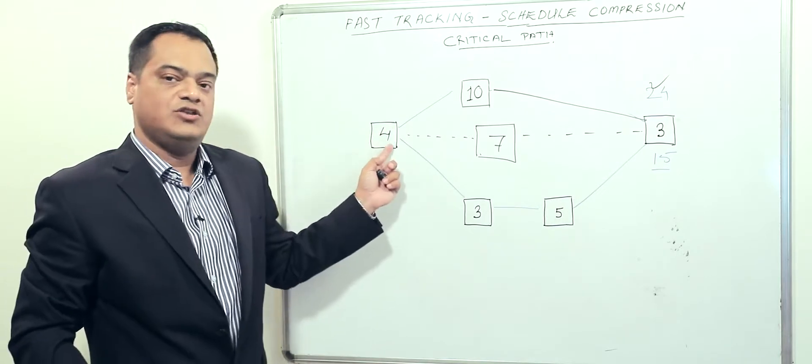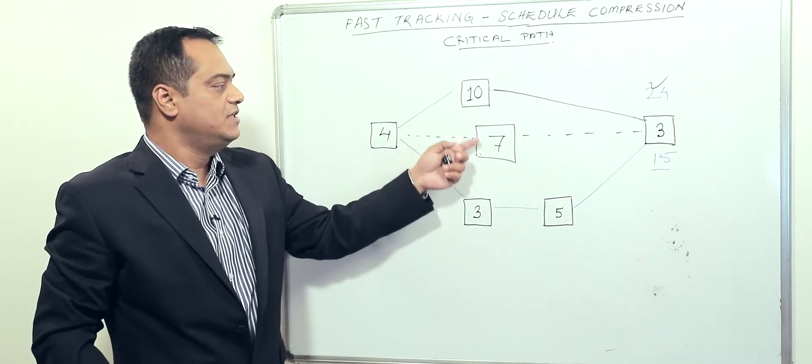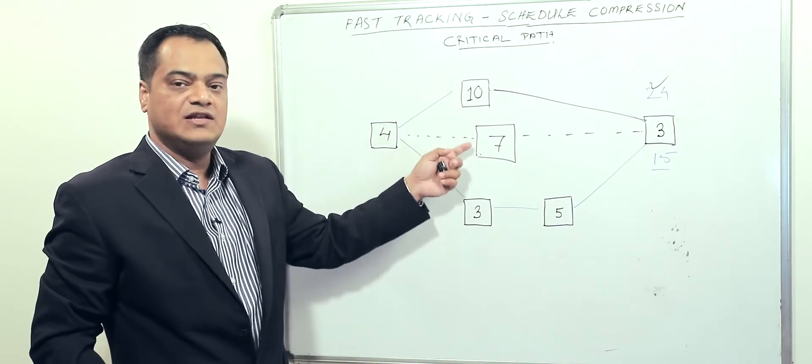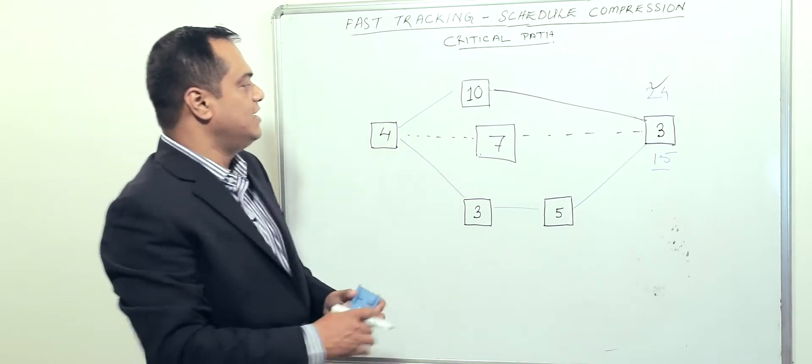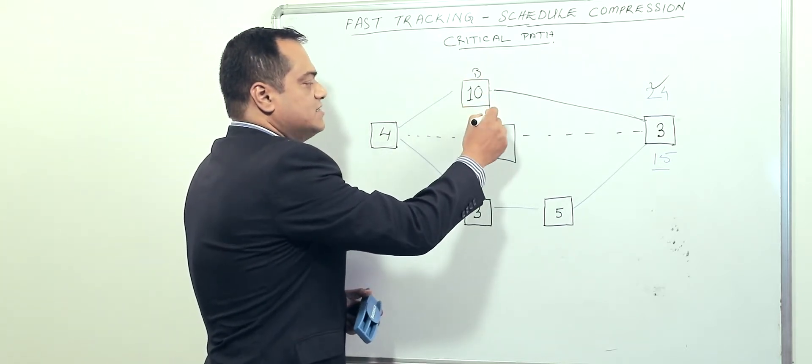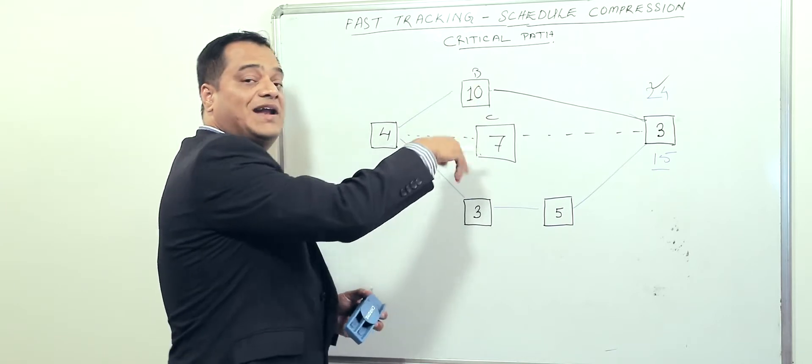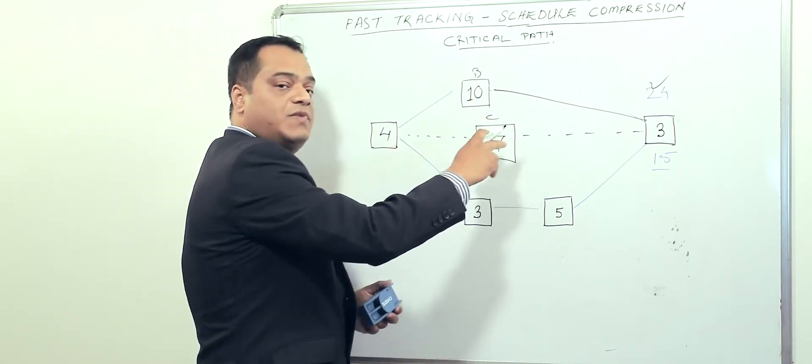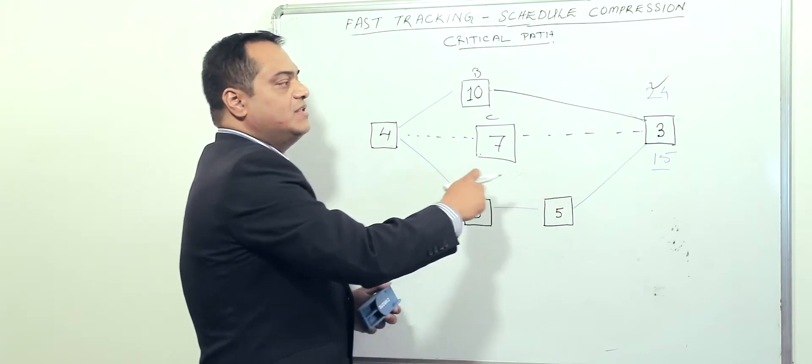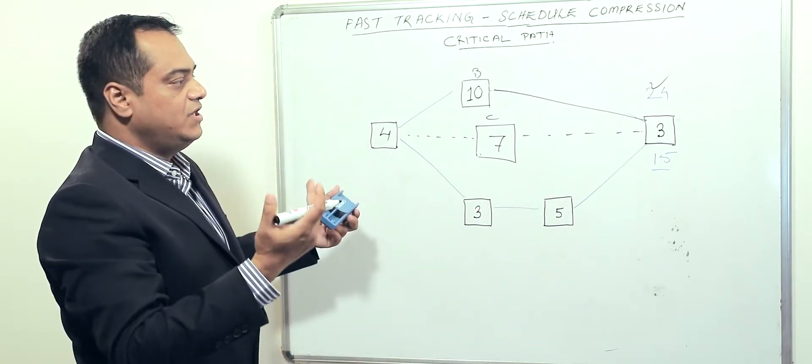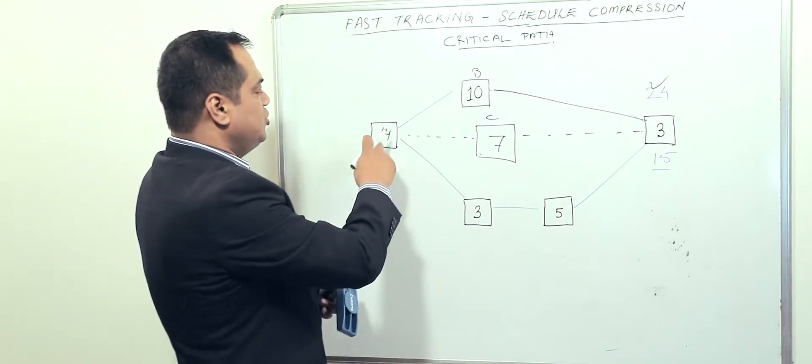We've created one new path because number seven - this path can run in parallel to this. Let's say this is B and this is C, so C can run in parallel to B. We've created a new path. If we recalculate our path...